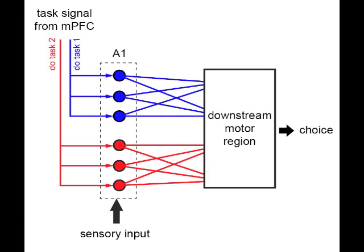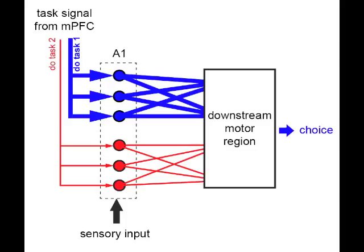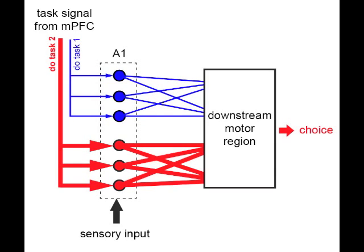Now, just by adding in some anticipatory activation to the population for selecting noise bursts, the network's overall choice is biased towards selecting those sounds. Of course, we can also activate the other population, and now the network selects tones.